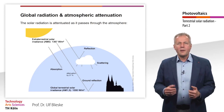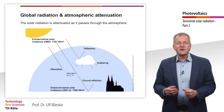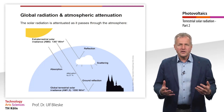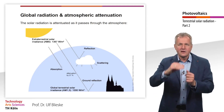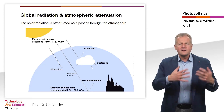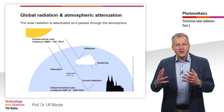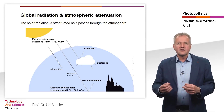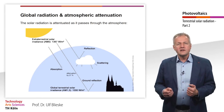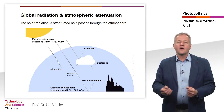Some of the radiation, represented by the central arrow in the picture, will be reflected from the ground. This part becomes important when dealing with inclined modules, as described in one of the next units. Some of the radiation, represented by the third arrow from the left, will be either reflected or scattered, for example by clouds. Scattering leads to diffuse radiation — solar radiation which comes from all directions of the hemisphere.